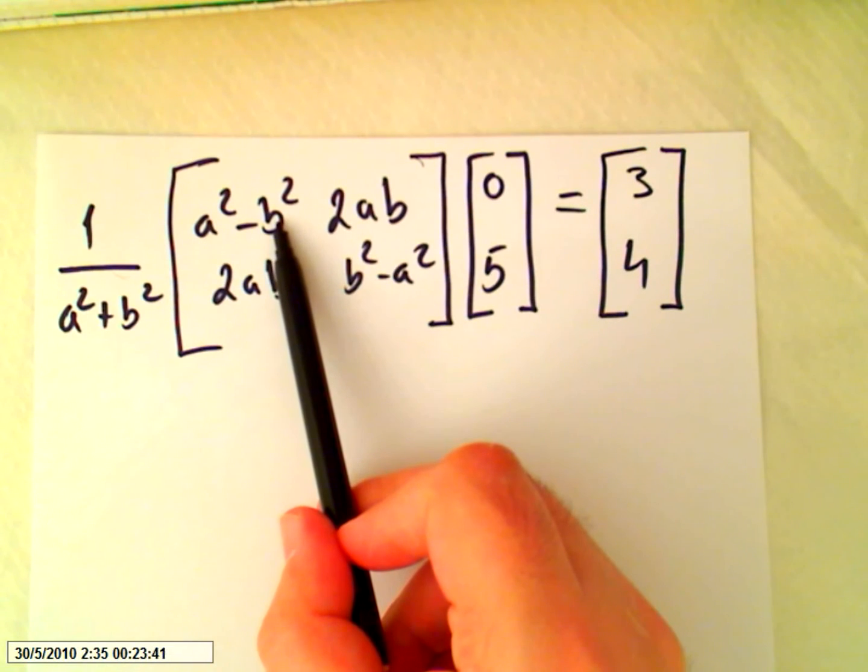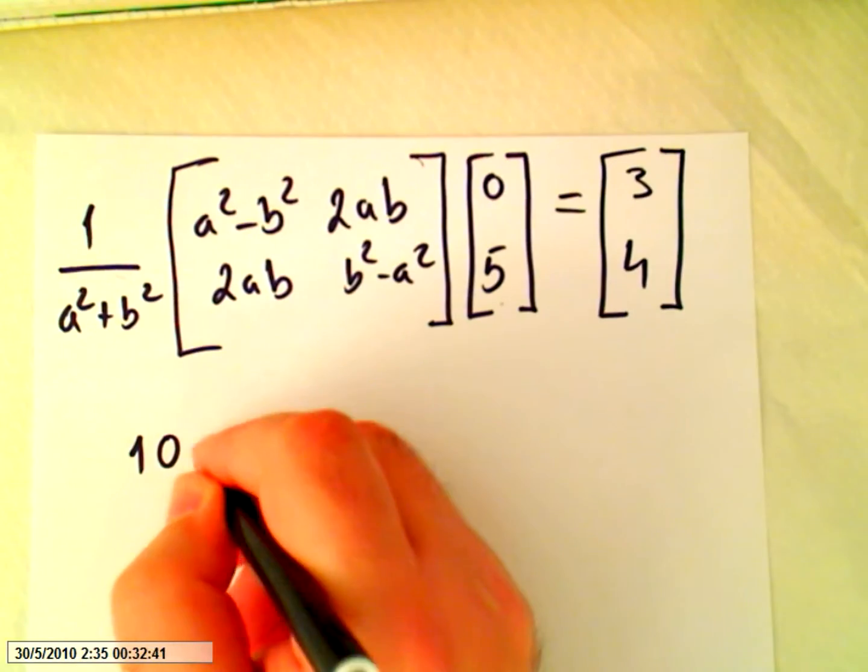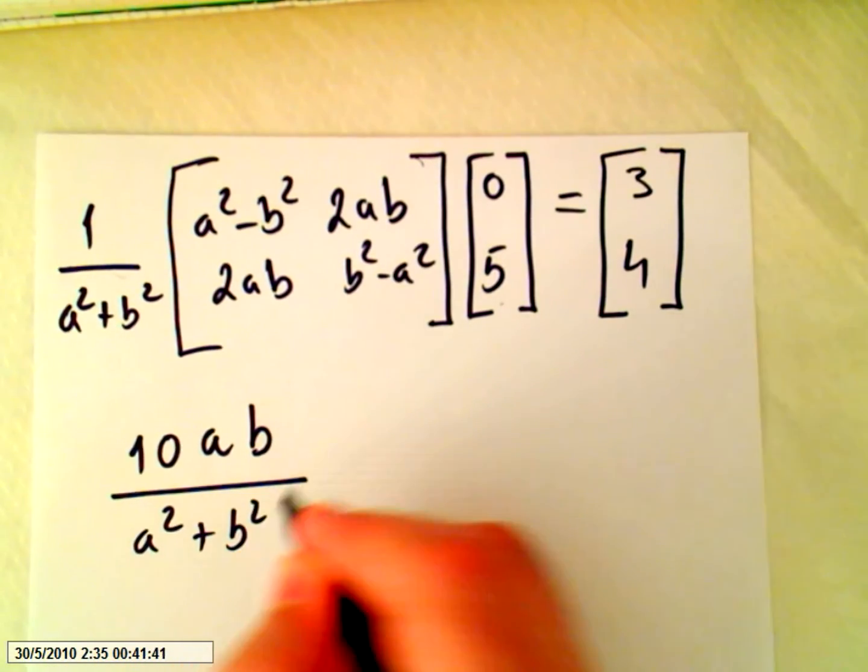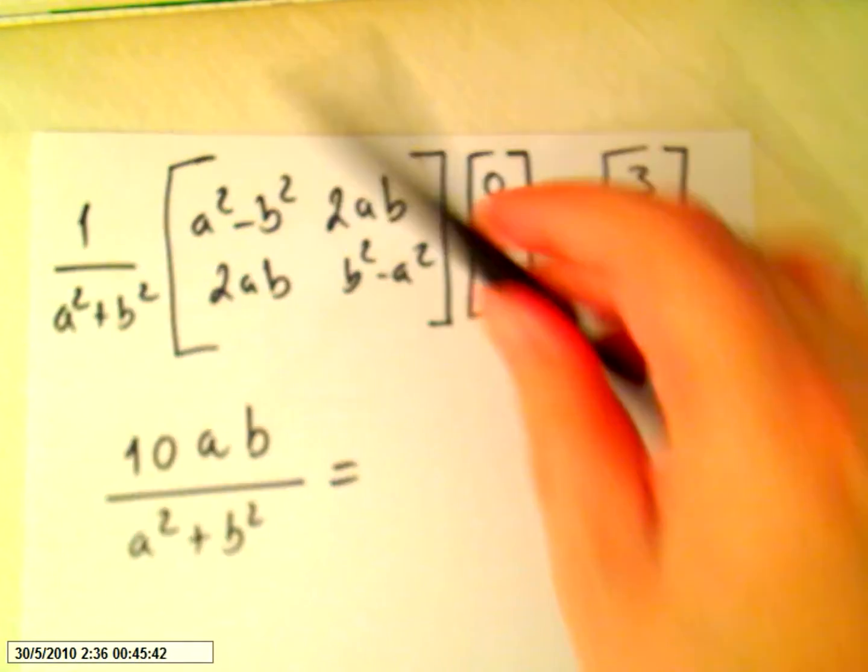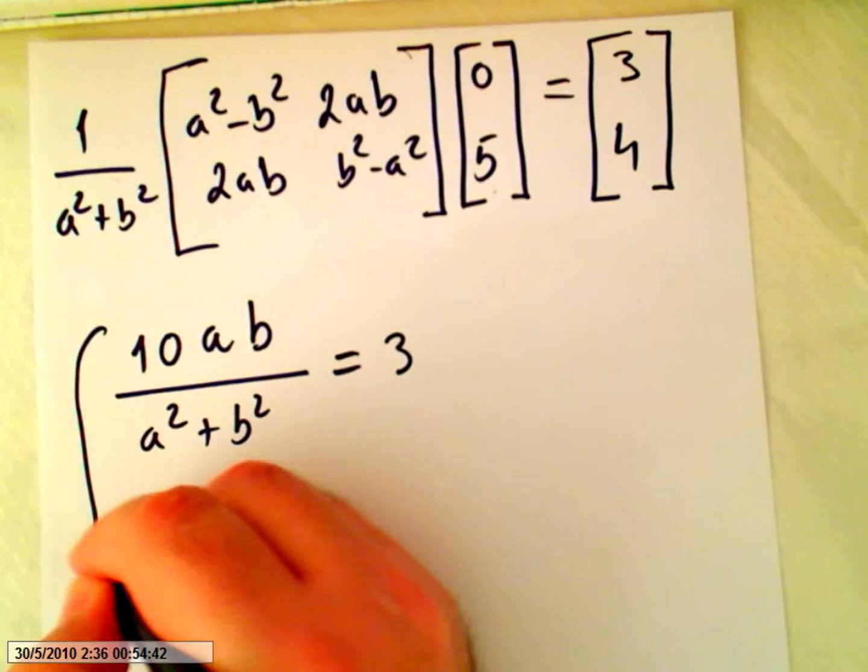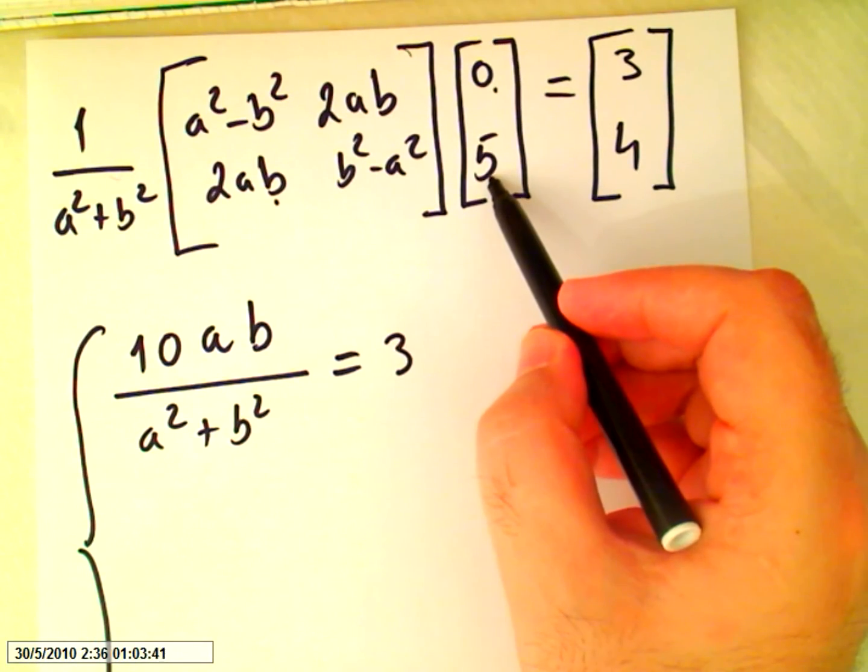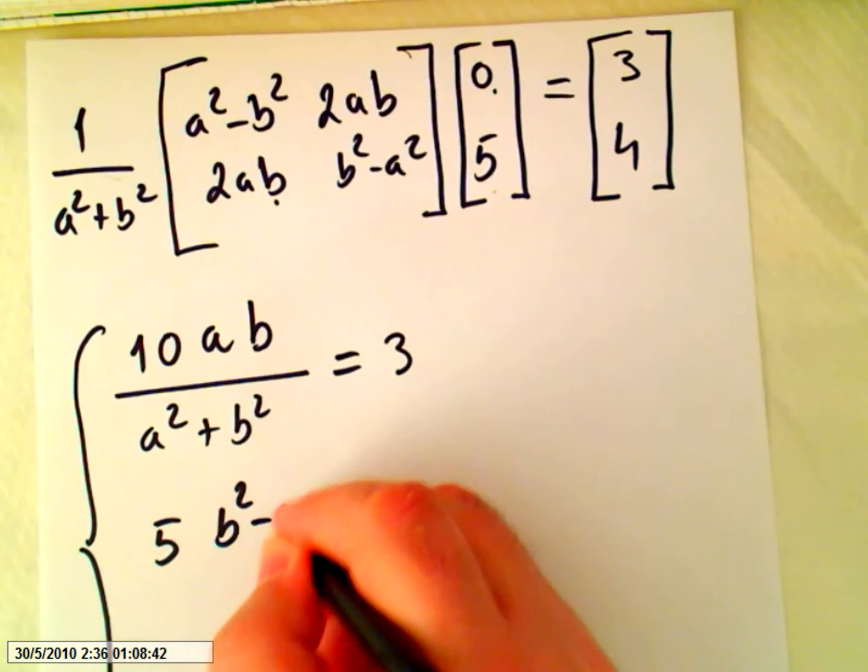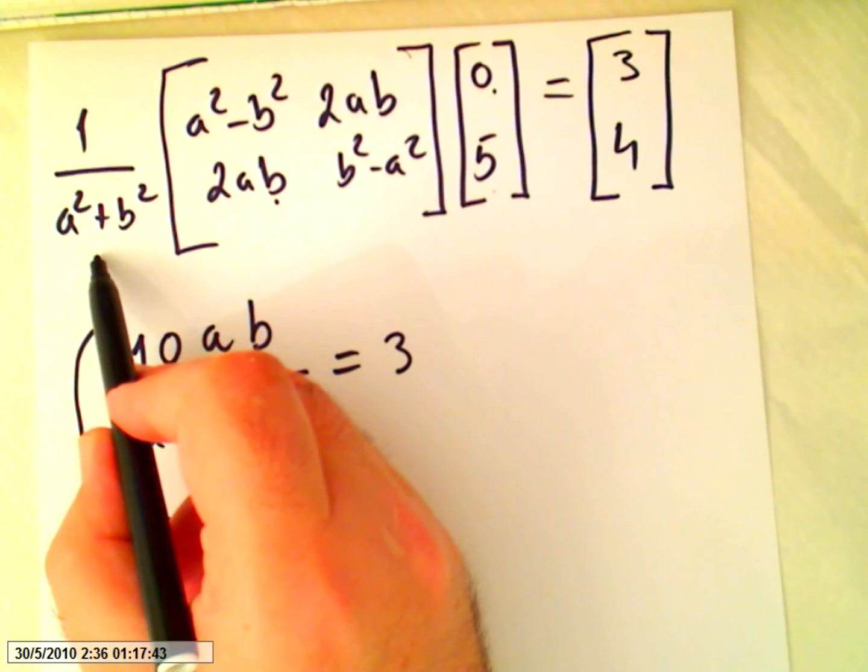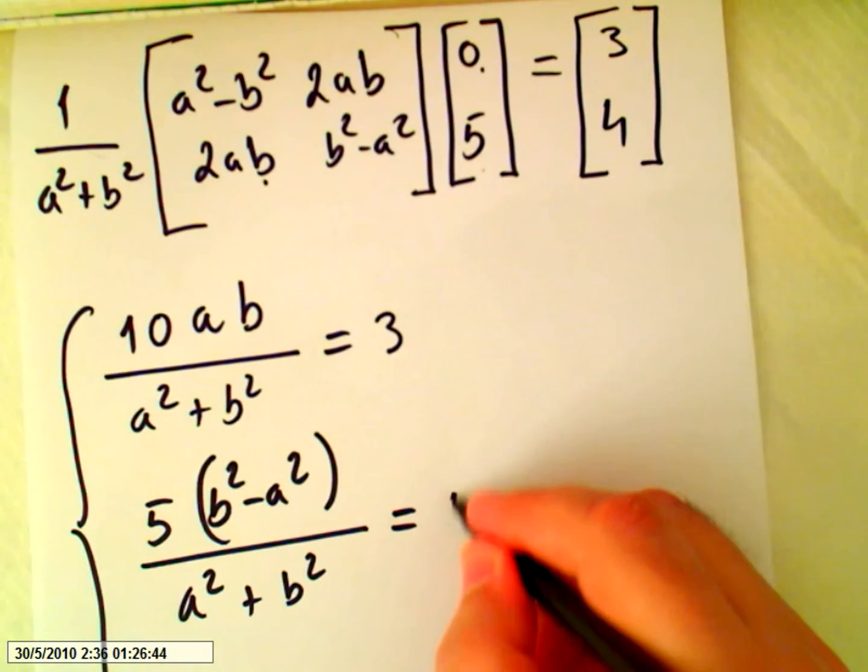So this one multiplied by zero we will get zero, and here we will have 10ab. But do not forget that this matrix is multiplied by a squared plus b squared. And so this line with this column we will get 3. Now 2ab times zero is zero, so we will have 5b squared minus a squared over a squared plus b squared, and this equals 4.